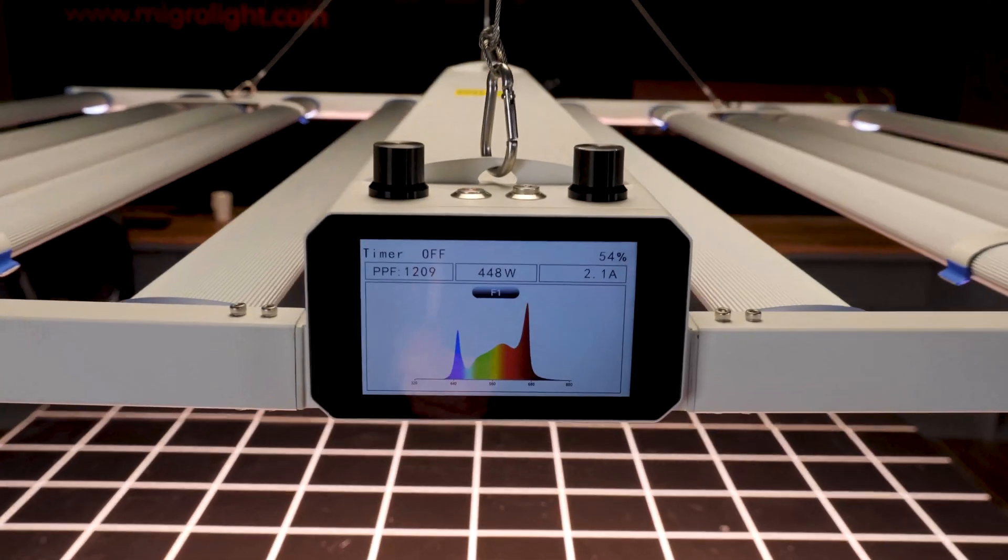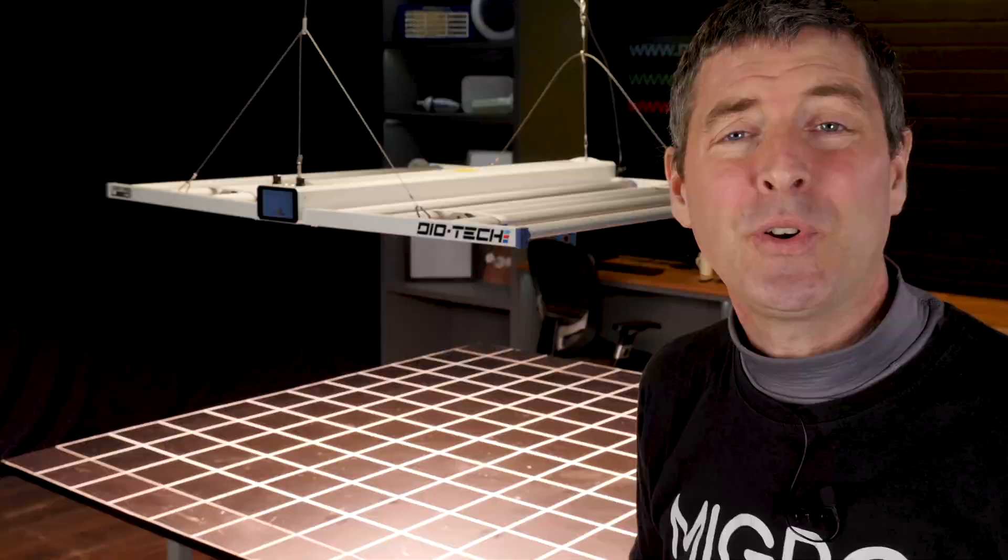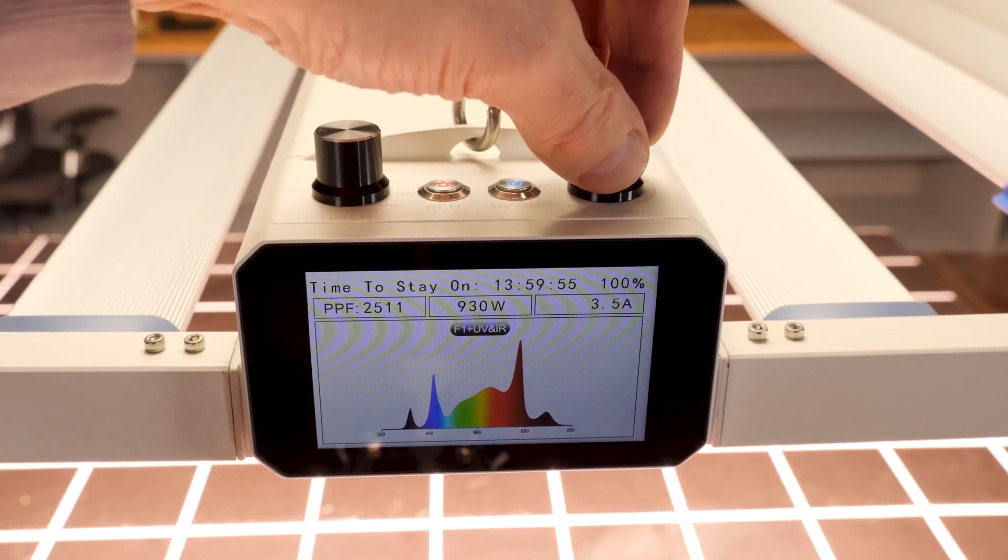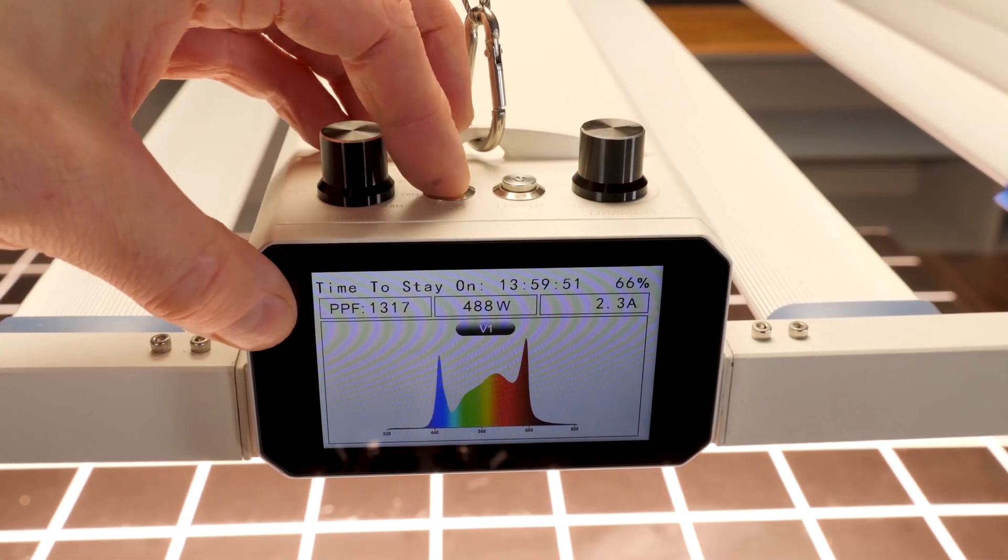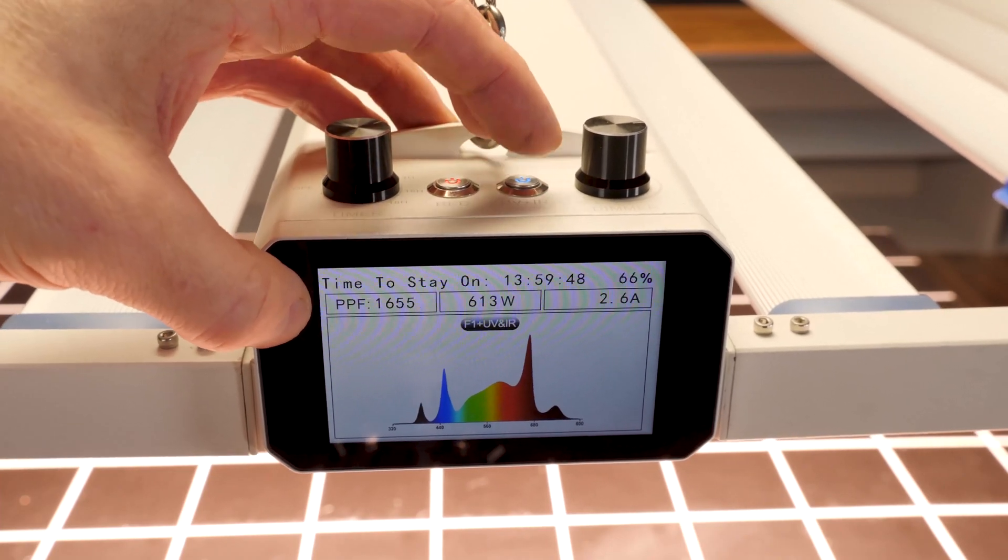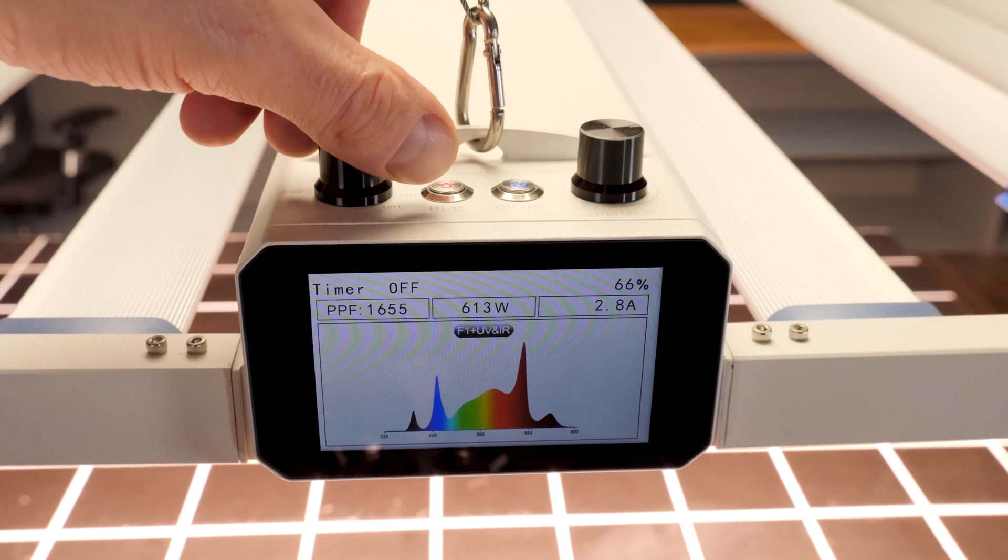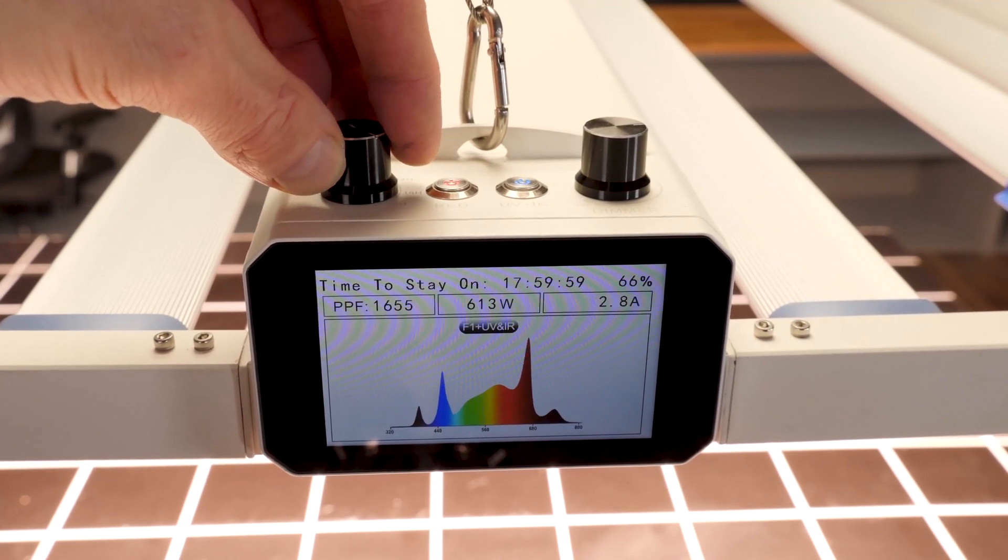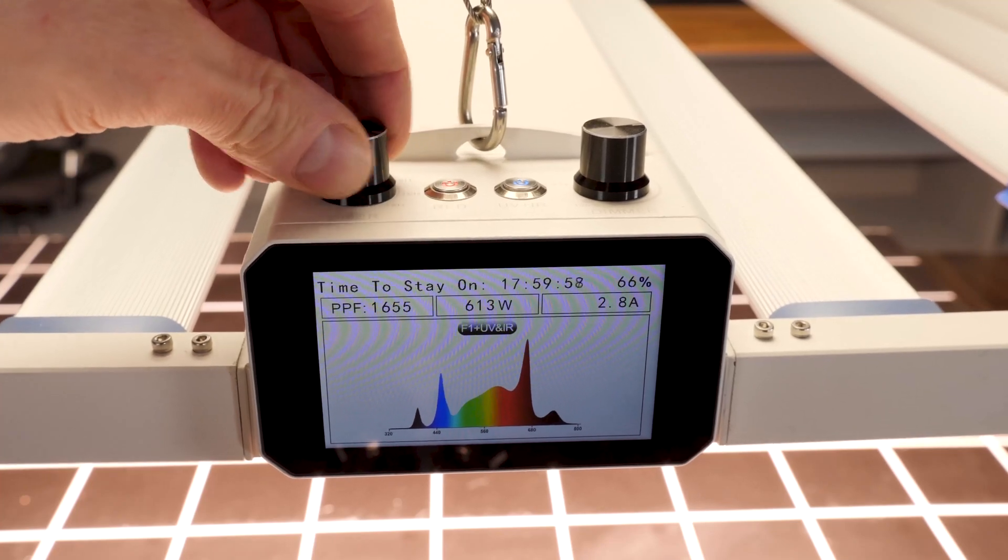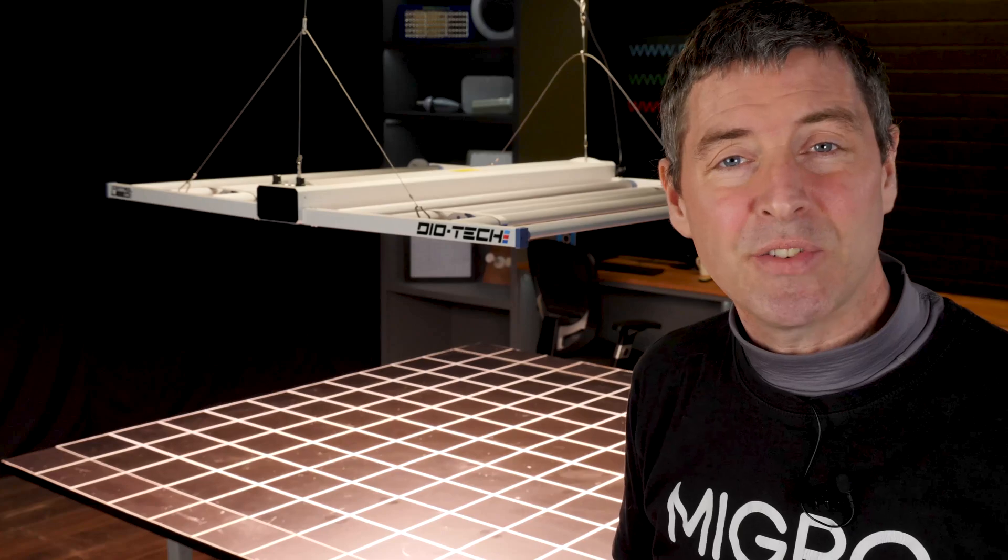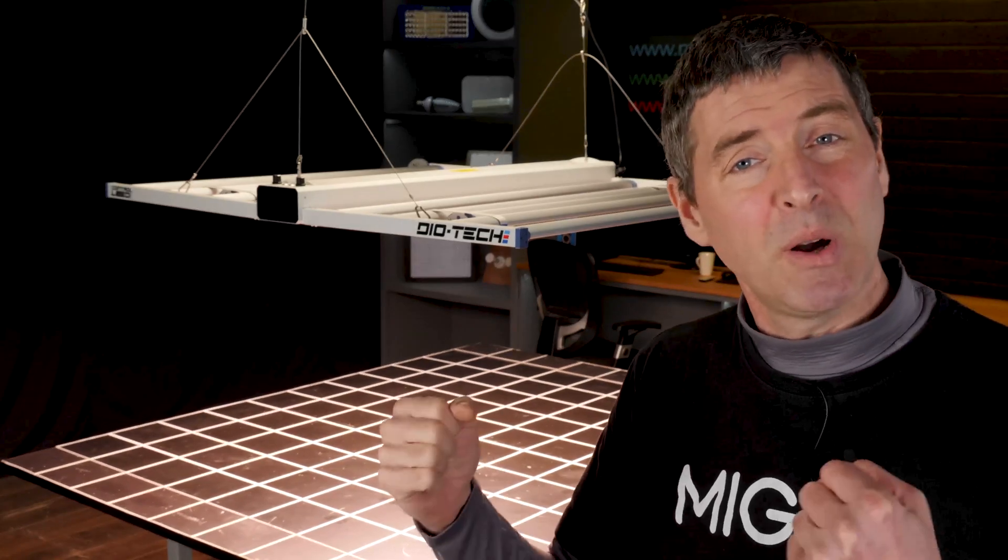On the unit you can also control the spectrum output, so you've got full dimming control to adjust up and down from 10 to 100%. You've also got two settings: you've got a veg setting which is higher in blue, good for short dense growth in the veg stage, and then you've got a flowering button which boosts the red output, which increases its electrical and photosynthetic efficiency for the flowering stage where you really want that oomph.